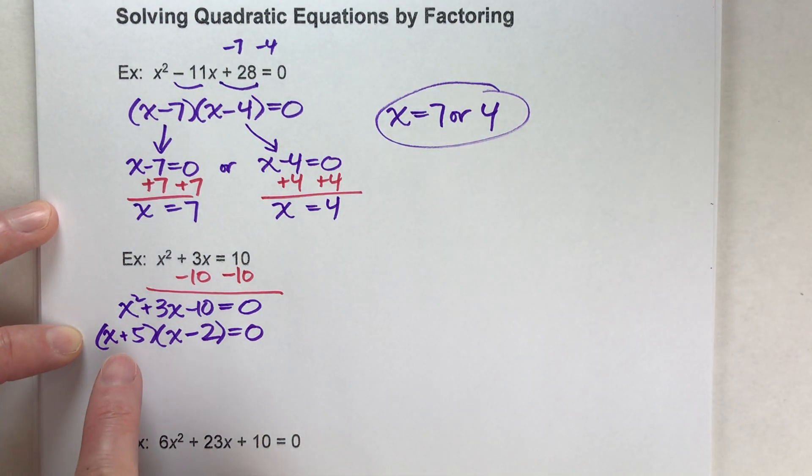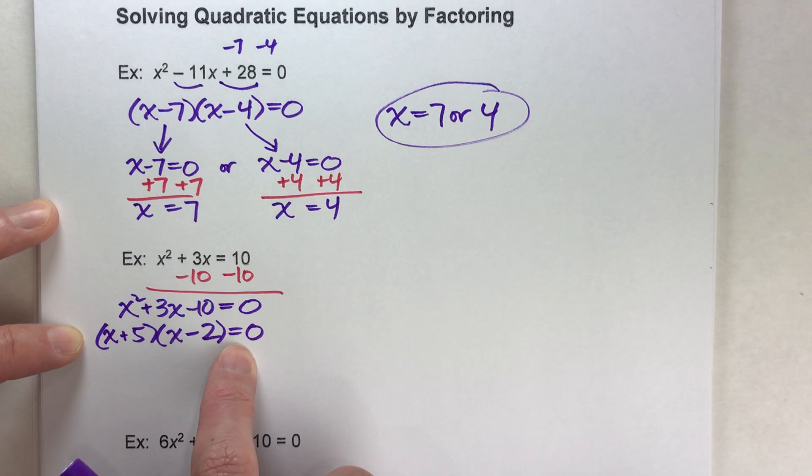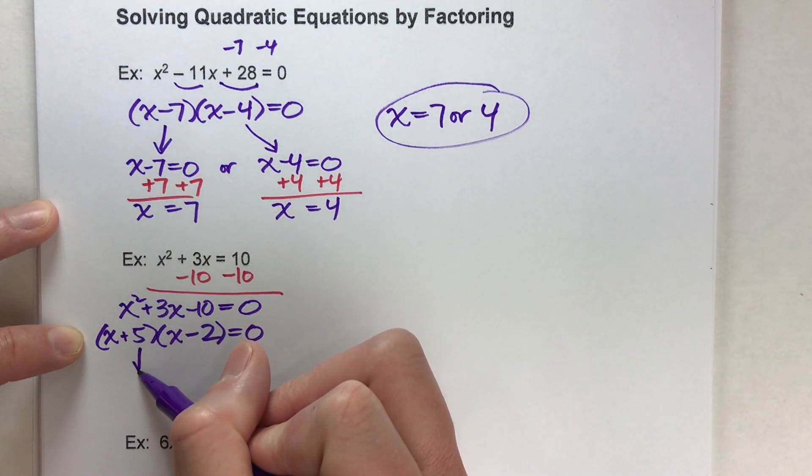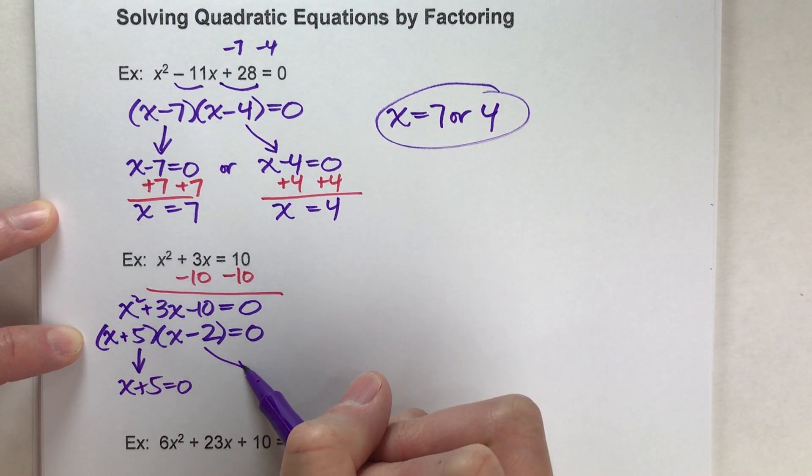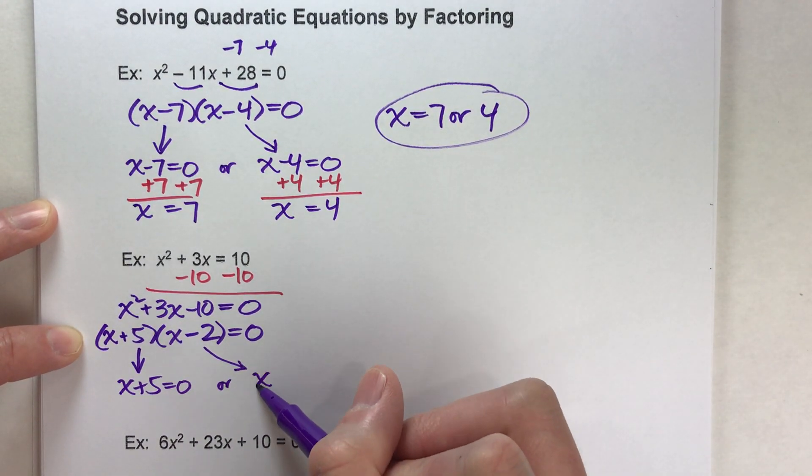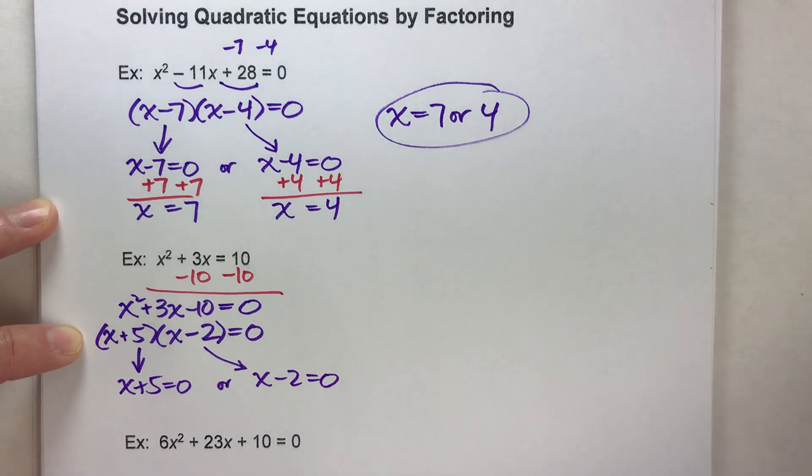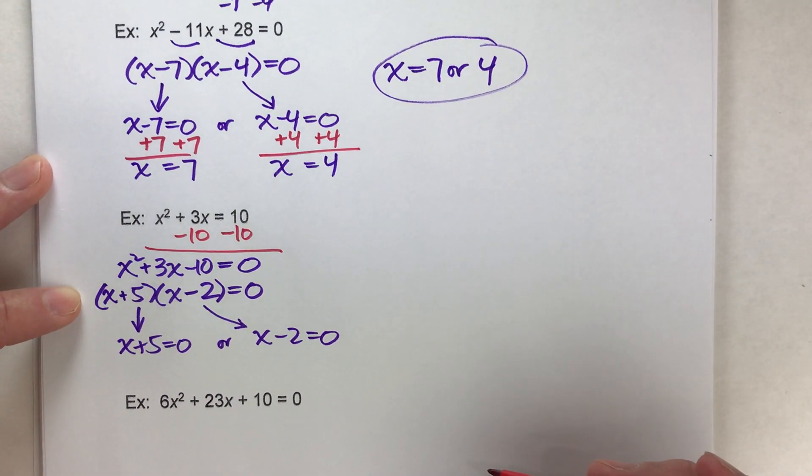Now we've got something times something equals 0, so what does that tell us? That means either this is equal to 0 or that's equal to 0.